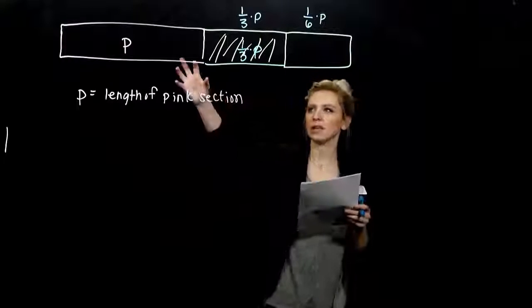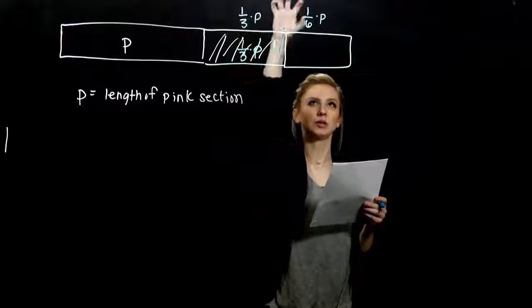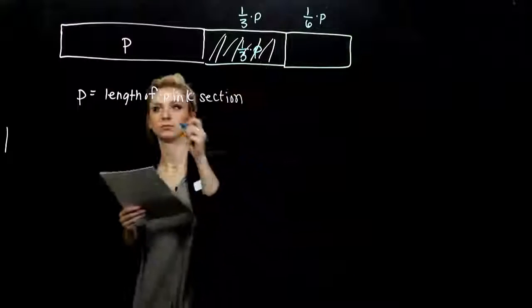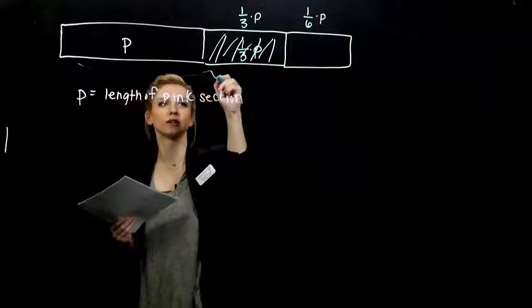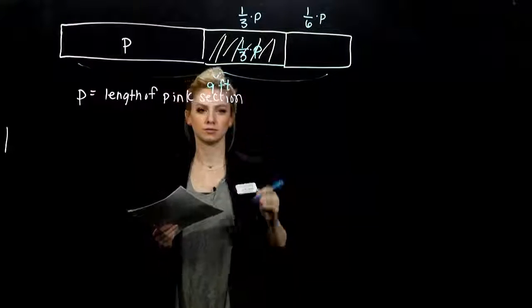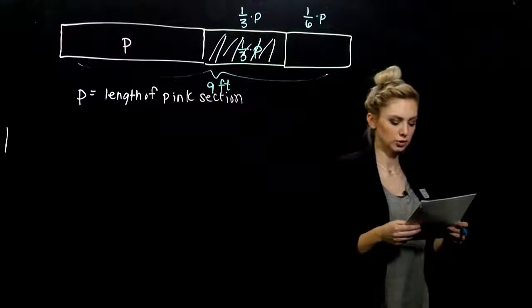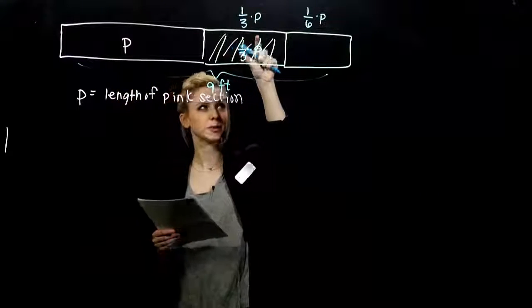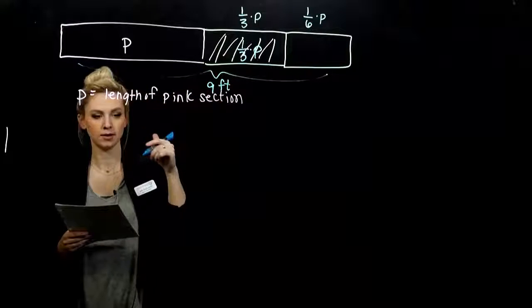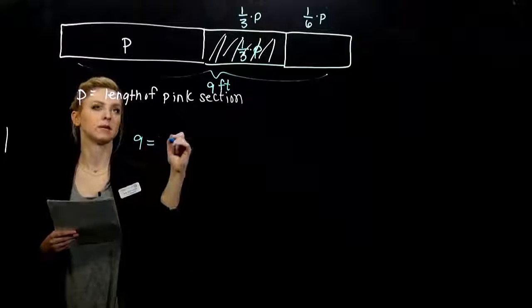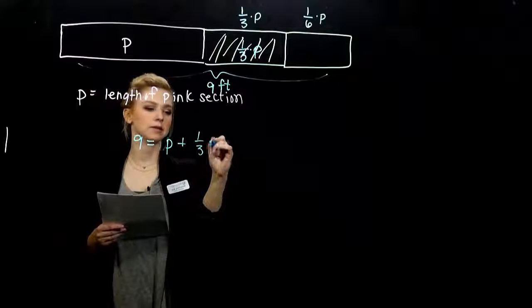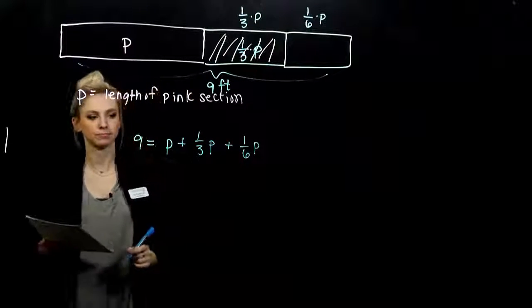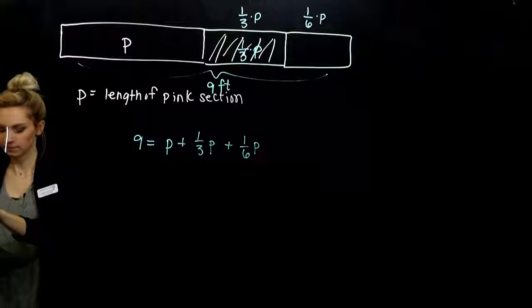What other parts do we know? P is the length of the pink. The mixed section is one-third the length of the pink. So we've got one-third times P. And what about the green? The green section is one-sixth of the pink. What other pieces do we know? I have individually a relationship about the pieces. But altogether, how long is the scarf? Nine feet. So altogether, nine feet long. So if I add up the pink part, the mixed part, and the green part, altogether it has to be nine feet long.